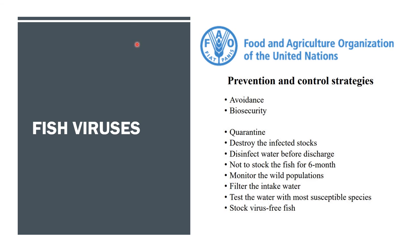To conclude, the prevention and control strategies recommended by the Food and Agriculture Organization of the United Nations (FAO) include: avoiding stocks that are infected or have the disease, practicing biosecurity and quarantine, destroying infected stocks, and disinfecting water before discharge.